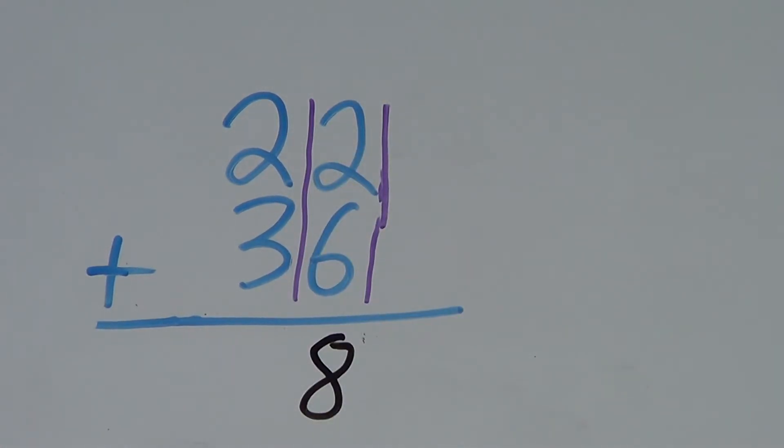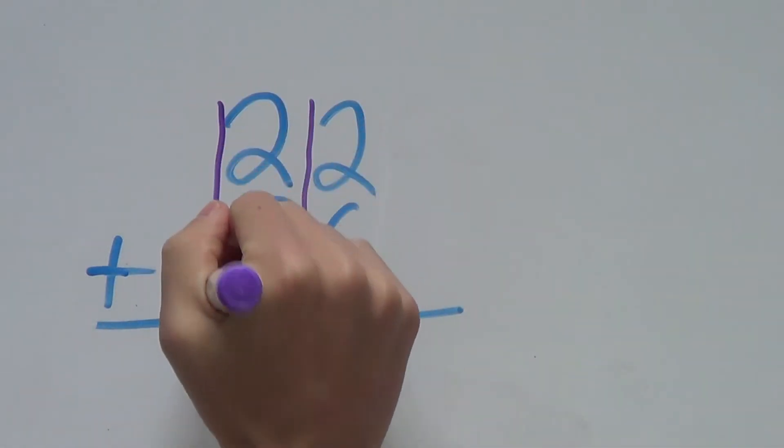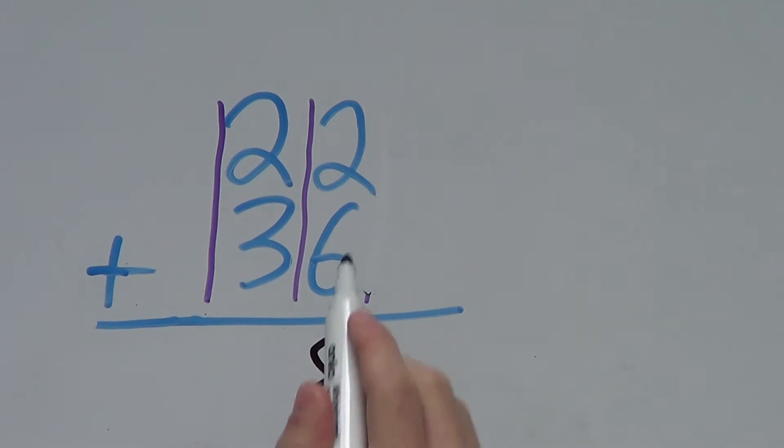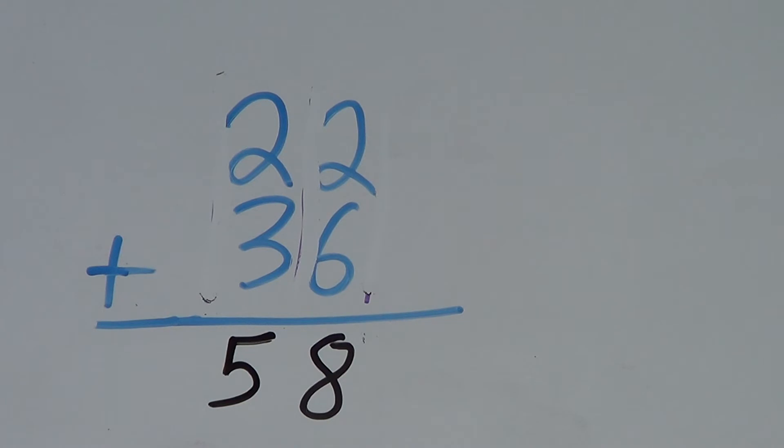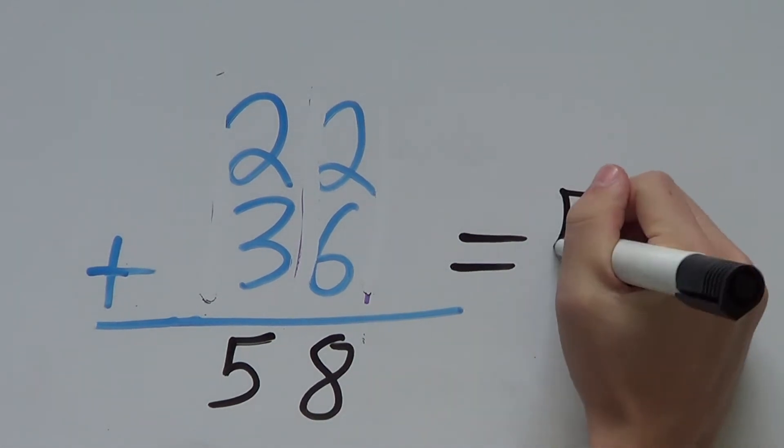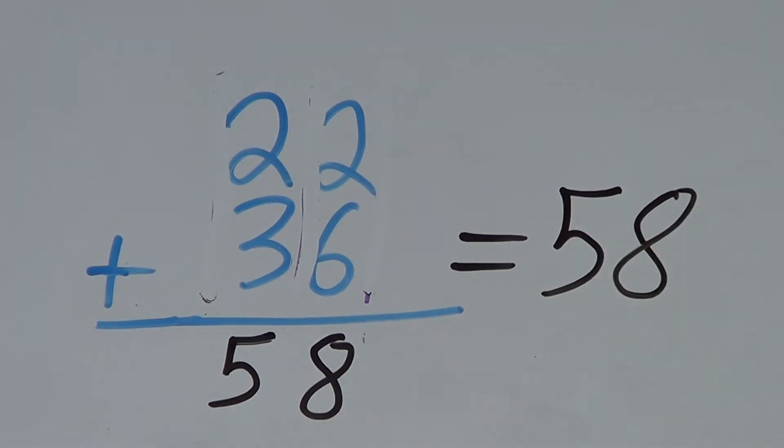Next up, our next column, we have 2 and 3. So we work to the front. We add 2 plus 3. That gives us 5. So we write 5 right below that. And we're done. That's our solution. 58. So 22 plus 36 equals 58.